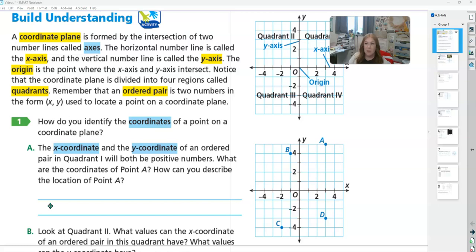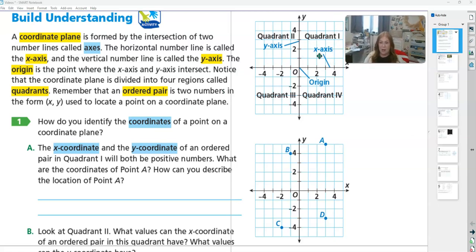For our 11.1 task 1, we're going to be looking at this coordinate plane. So the coordinate plane is made up of two number lines that are intersecting. We always do x first and then y, and it goes around 1, 2, 3, 4 quadrants.